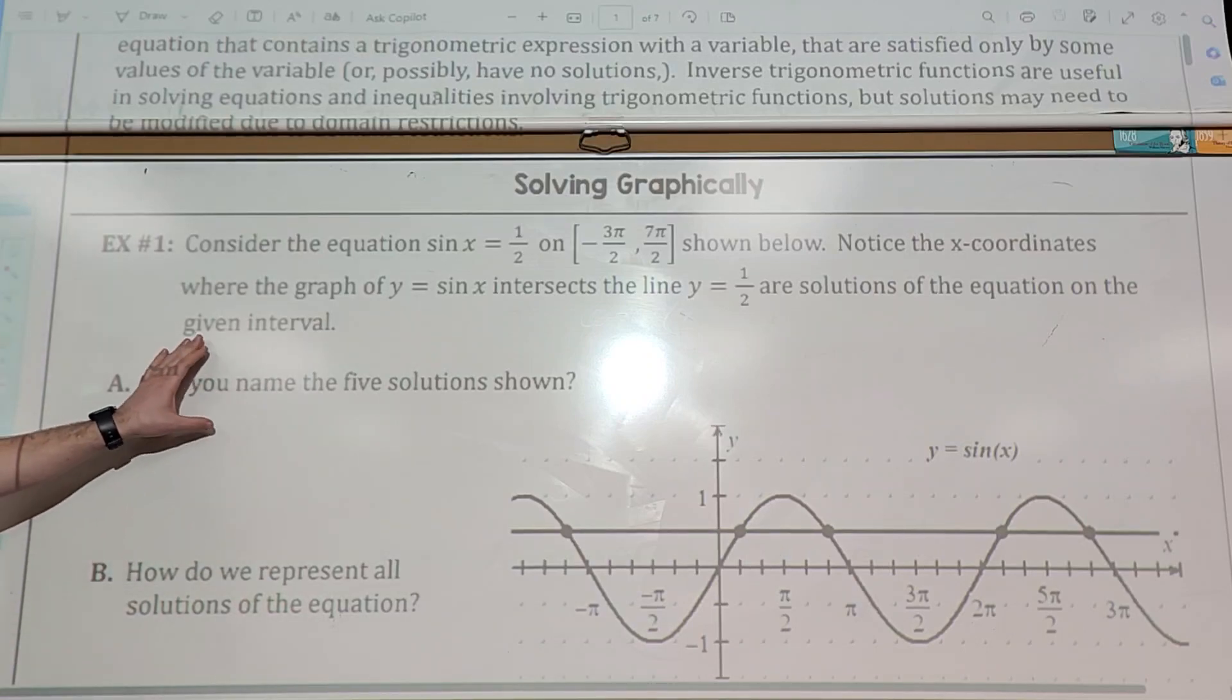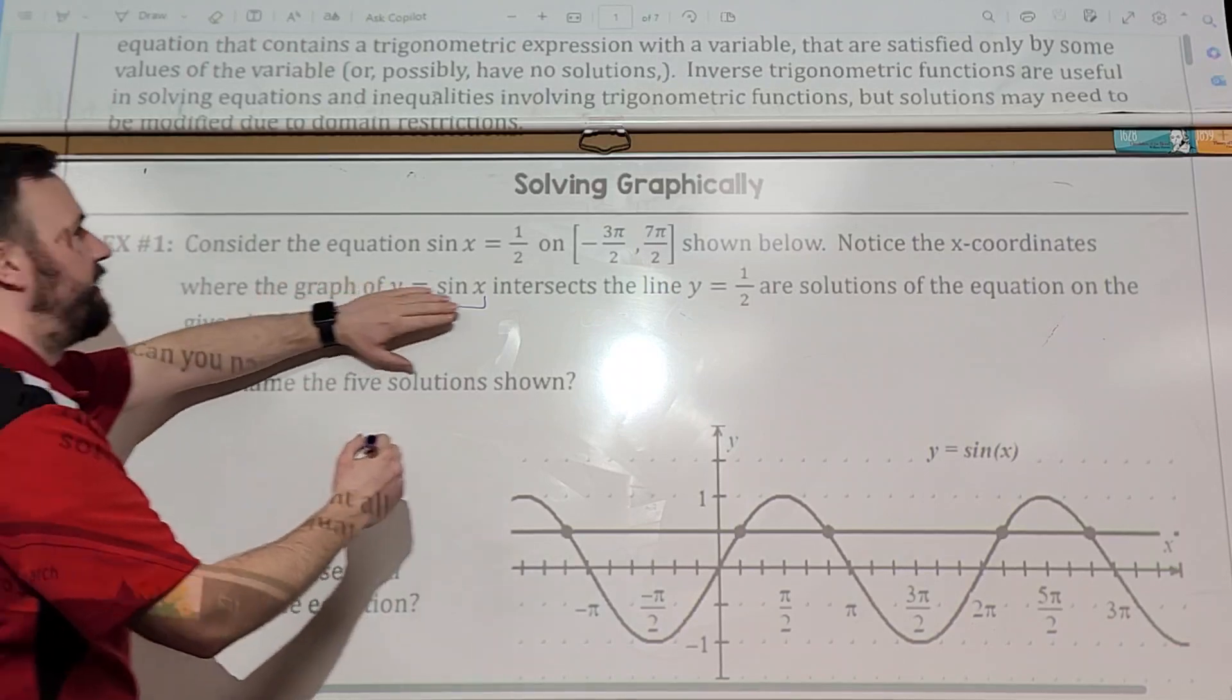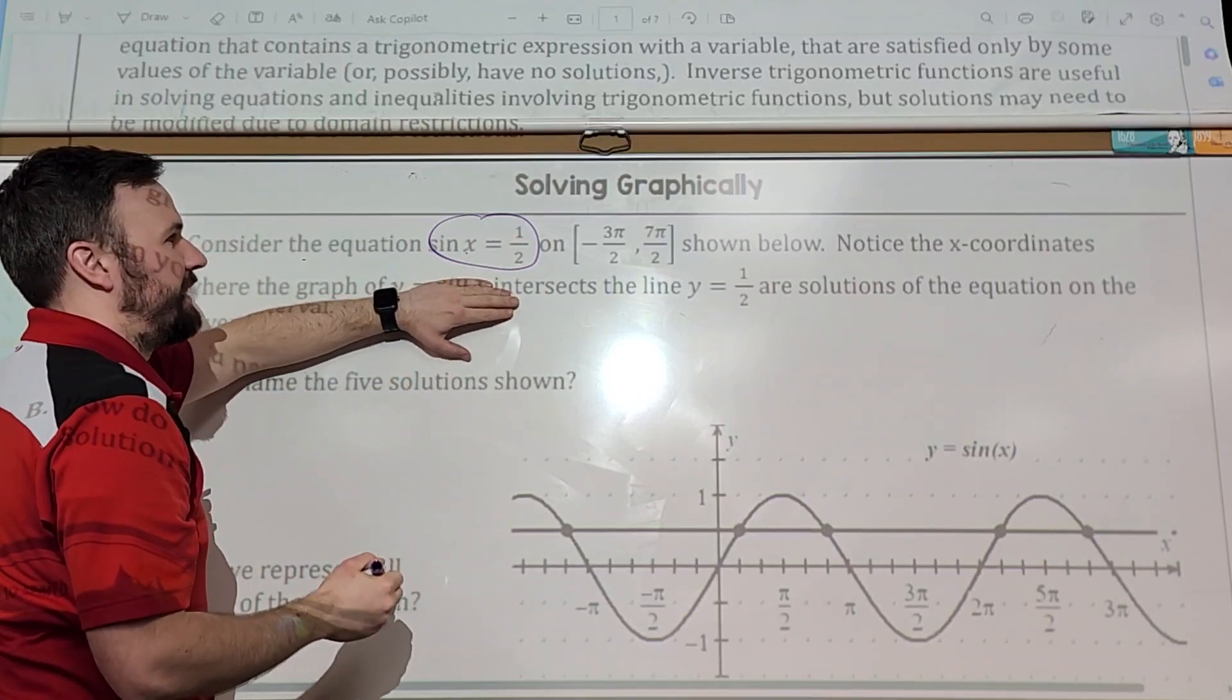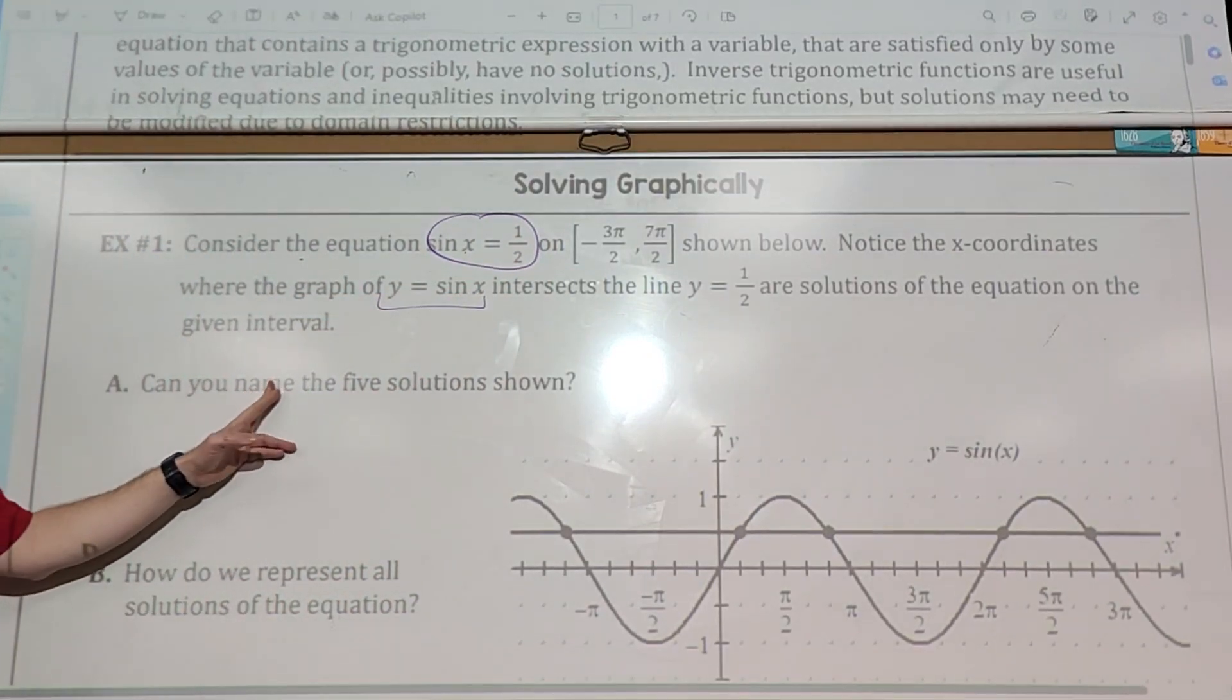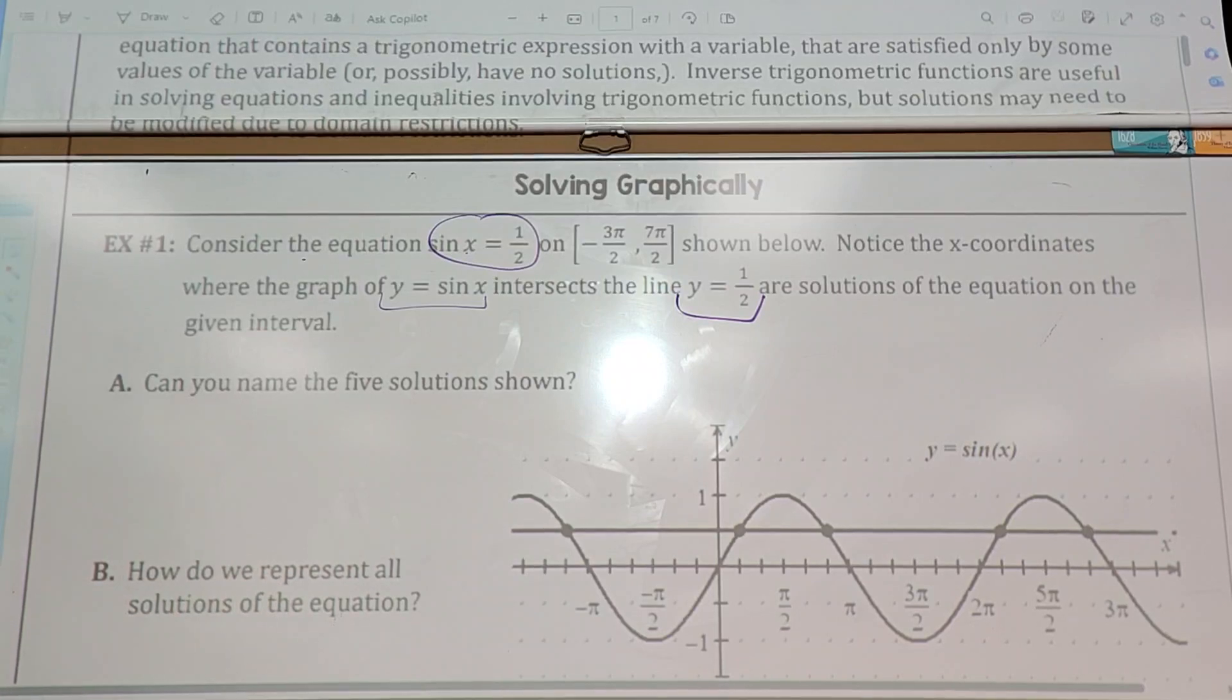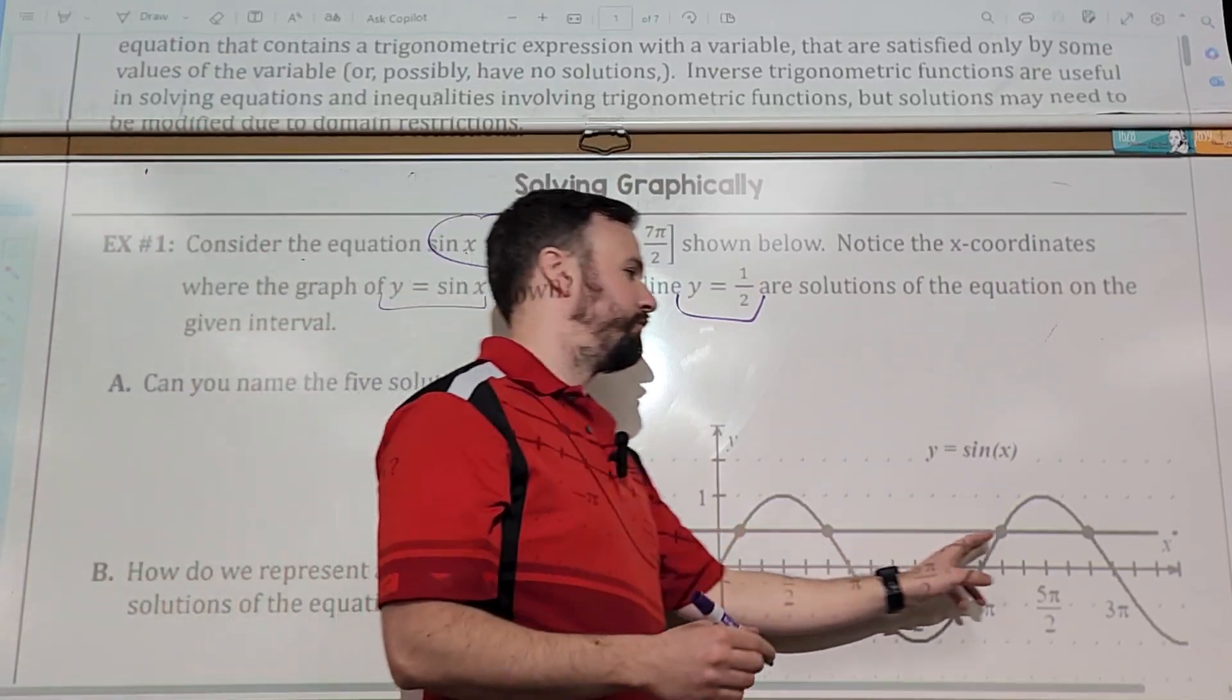Example one, let's look at this beast. We are looking at the graph y equals sine of x. Consider the equation sine of x equals one half on that interval. If I were to solve this by graphing, I would graph sine x and y equals a half, and then I would do second, calculate, intersect. How many solutions do I have on this window?